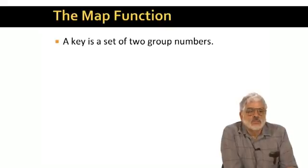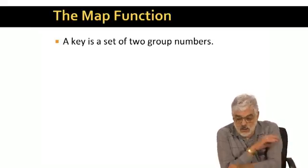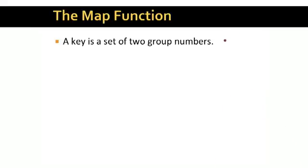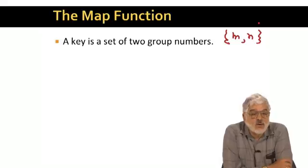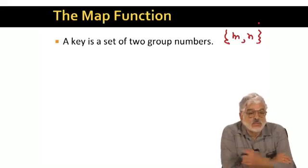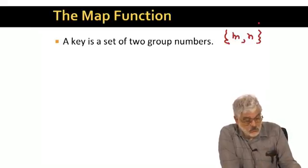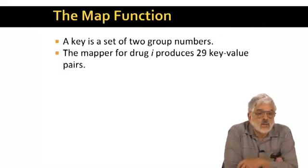So here's the new map function. Now a key is a set of two groups, rather than a set of two drugs. Keys actually really look the same. They're a pair of numbers, such as {n, m}. But now, n and m are interpreted as numbers of groups, rather than drugs. And of course, in this case, the range of the numbers is 1 to 30, rather than 1 to 3,000.